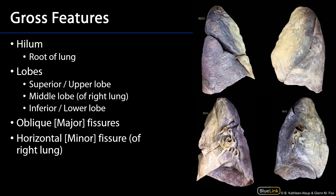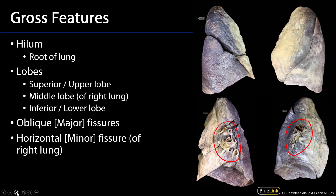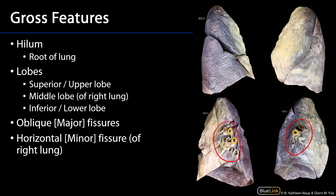Each lung on its mediastinal surface has a hilum, and that hilum contains the root of the lung. Each root contains bronchi — the primary bronchus can be seen cut at this point. There are also pulmonary arteries, shown in blue, which carry oxygen-poor blood from the right ventricle via the pulmonary trunk to the capillary beds of the alveoli.